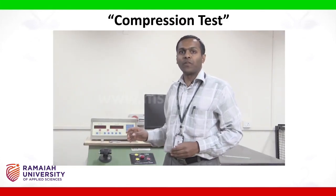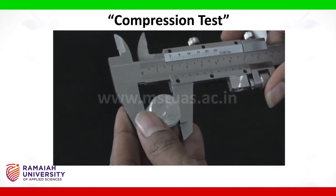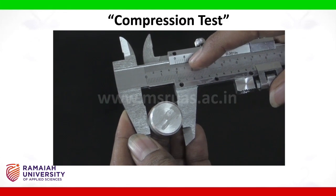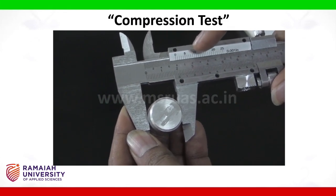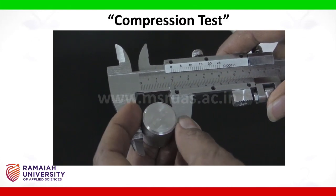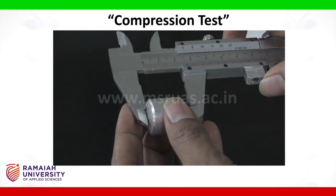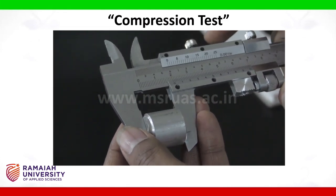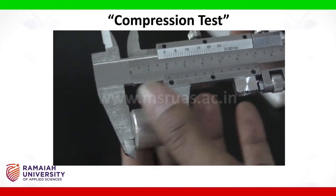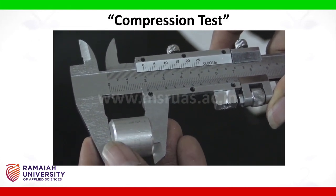First, let us measure the dimensions of the specimen. We are now measuring the diameter. The vernier reading shows the division is to the right of 20 millimetres, and the 5th division of the vernier coincides with the main scale division. Since the least count of the vernier is 0.02 mm, the diameter of the specimen is 20.10 mm. Now measuring the length: the 0th division on the vernier is to the left of 20 mm, and the coincident division is the 8th division. Hence the length of the specimen is 19.96 mm.